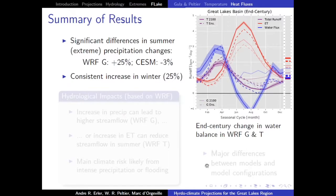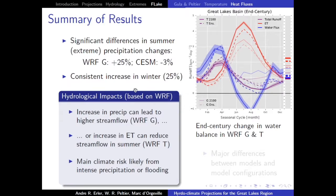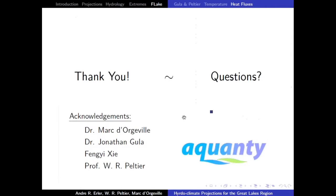Summary: there is a large difference between the two simulations. One shows drying and one shows more stream flow. For summer, there is a large range but there might be an increase in extremes. For winter, there is a consistent increase. The main risk might actually be from increased flooding if the G configuration is right, as that would mean quite a lot more water available. Keep the major differences between configurations in mind.